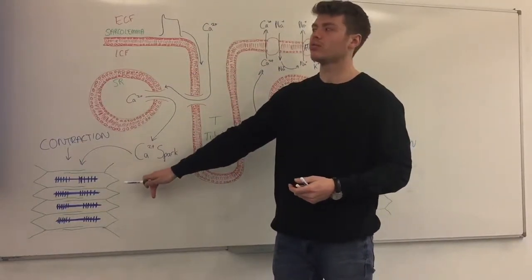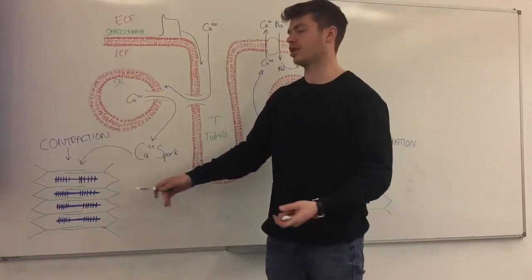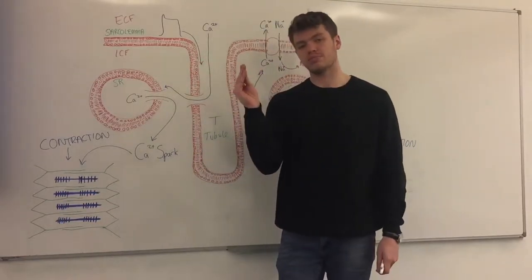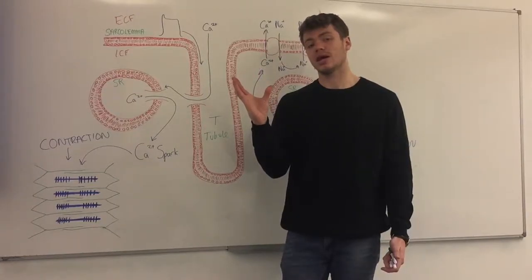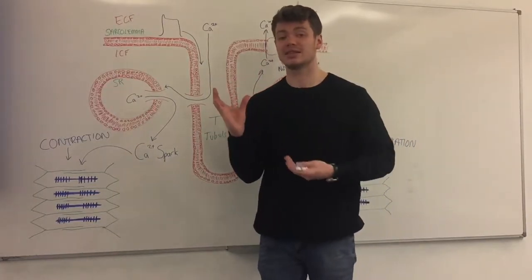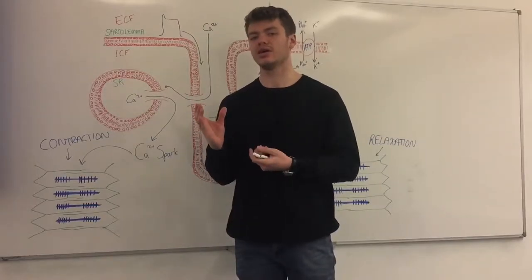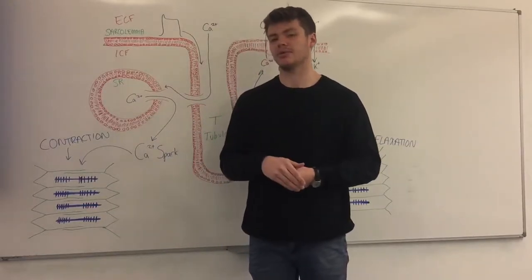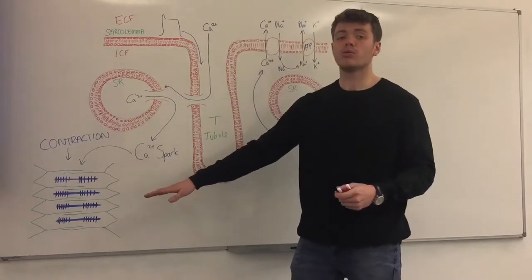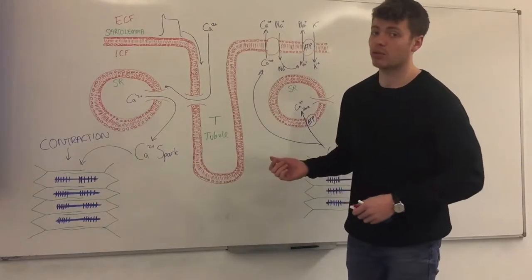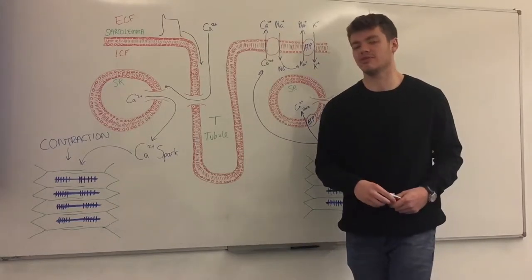So now we've contracted the heart. We've got the heart to squeeze blood out, but what we need to do is to relax and let blood re-enter the ventricles or re-enter the atria to allow another beat to happen. Otherwise you've got a heart rate of one and you won't survive for very long. So what we're going to do is move the calcium back where we found it and do the whole process in reverse.